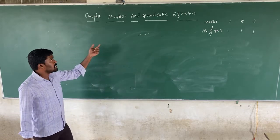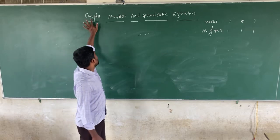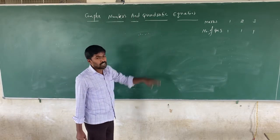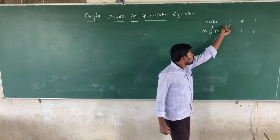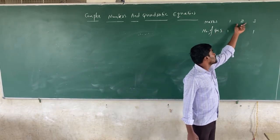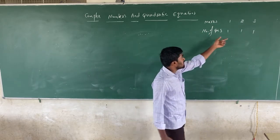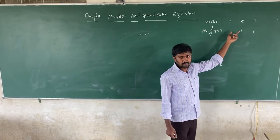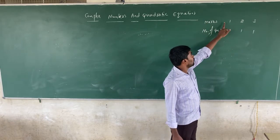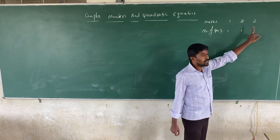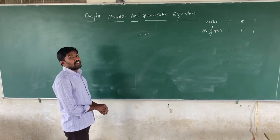There are 16 chapters in first year PUC Mathematics. In that, there is one chapter called Complex Numbers and Quadratic Equations. In this chapter, you should get one mark, two marks, and three marks questions — so total in this chapter you should get six marks in the annual examination question paper.